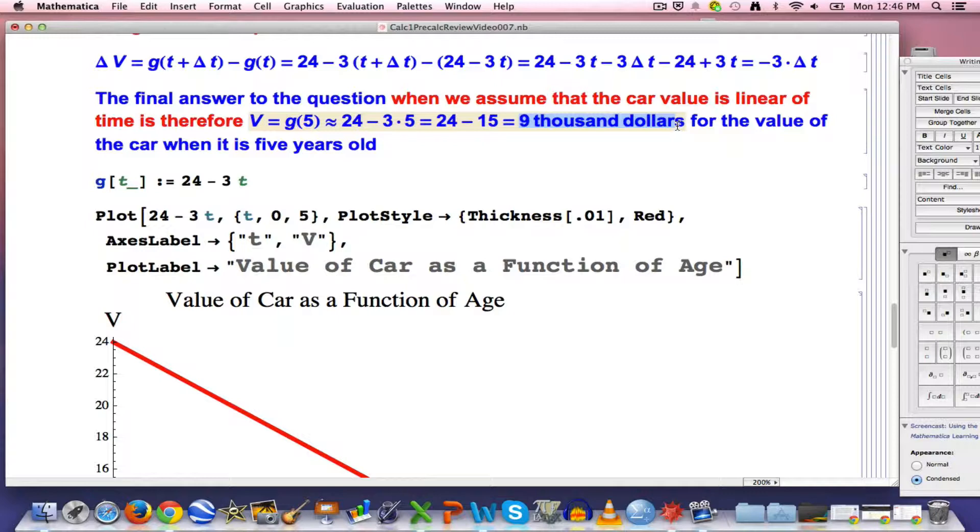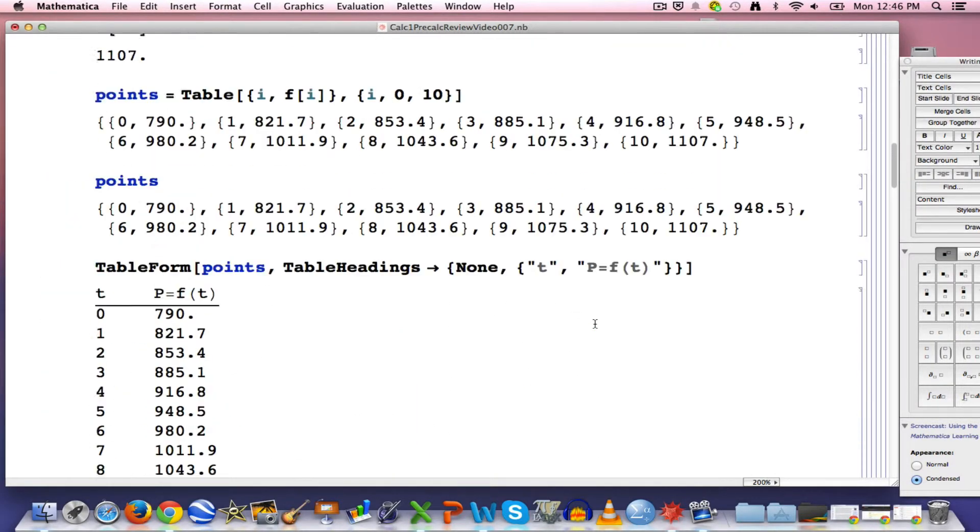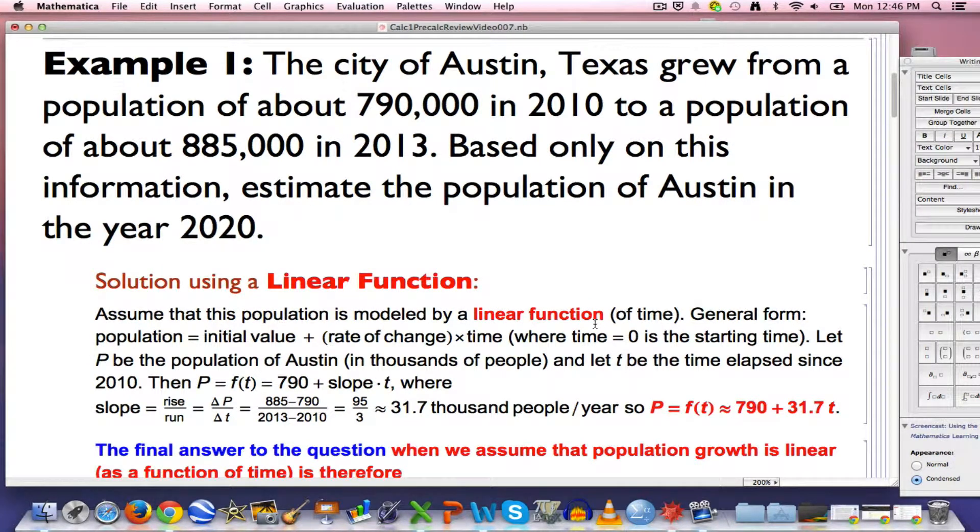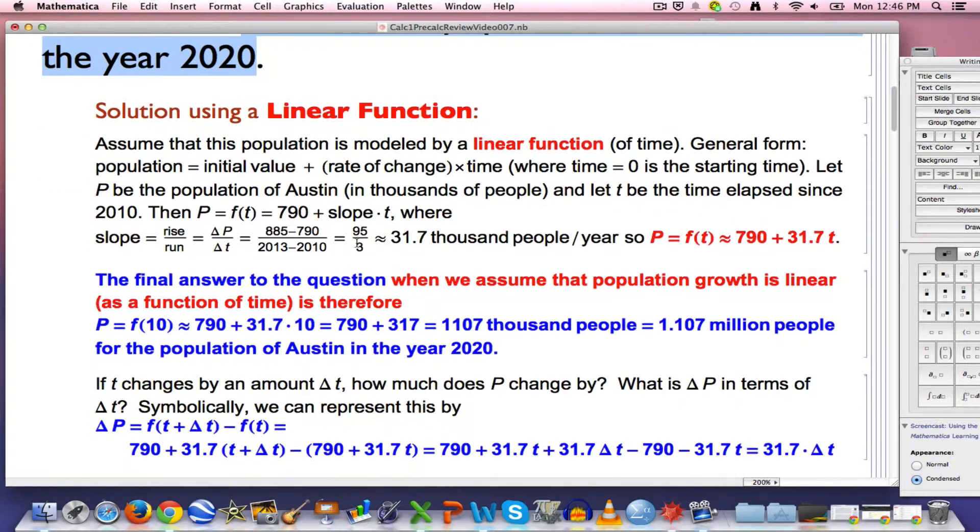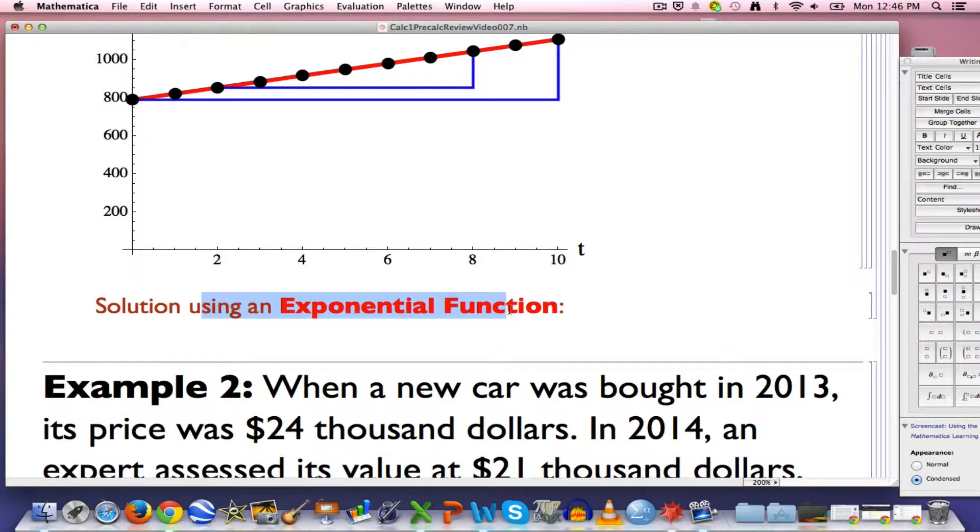I would encourage you to pause the video and think about what's going on here. Maybe graph this function and compare it with the graph of the other one. We will come back to that in the next video. But right now, for the rest of this video, I want to go ahead and answer this question in the context of the population growth. Austin, Texas, growing from 790,000 in 2010 to 885,000 in 2013. With a linear function, we got an estimate of 1.1 million people for the year 2020.